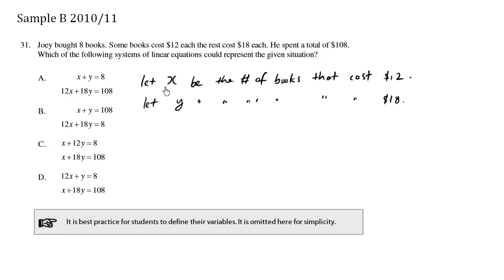These books are more expensive than these ones here. What do we know? We know that Joey bought eight books. Some books cost this much and the rest cost this much. So X plus Y equals eight since Joey bought a combination of these books.